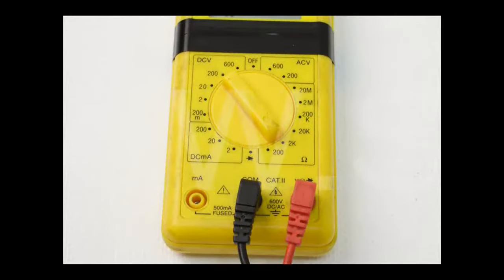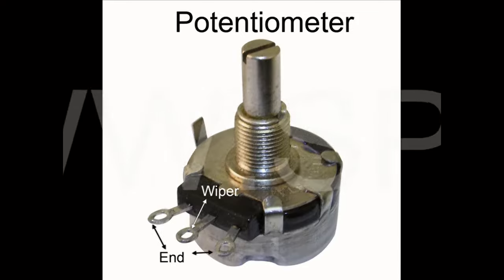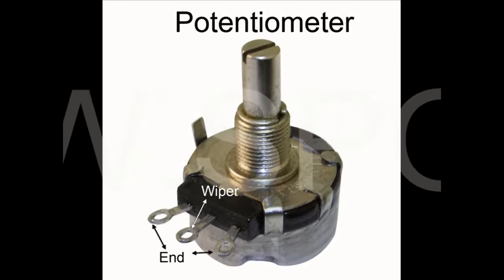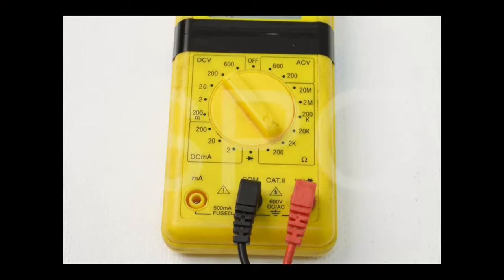Remember to always set your meter to one range higher than the component being tested. This potentiometer is rated at 1000 ohms or 1k ohm, so we will be using the 2k setting.